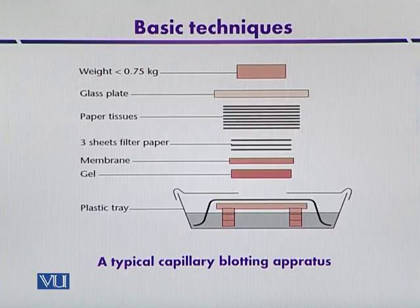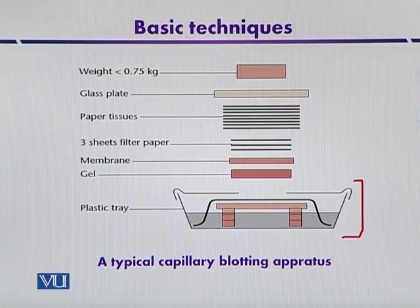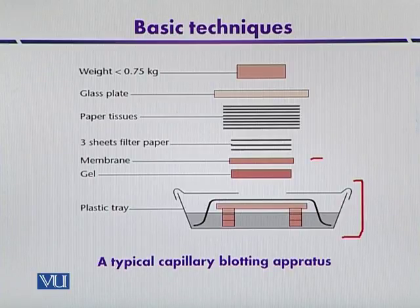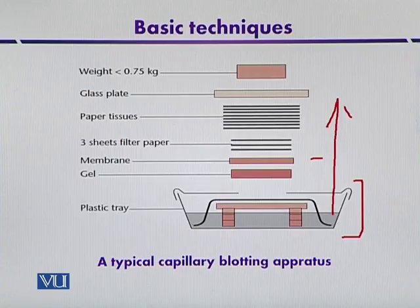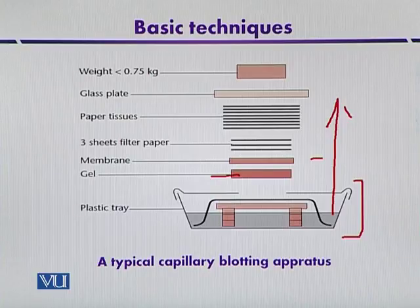This diagram shows a typical capillary blotting apparatus. There is a reservoir containing buffer solution. The gel is in contact with this buffer, and above the gel one places the membrane. The membrane is in contact with different filter papers or tissue papers so that it can absorb the buffer. As the buffer is absorbed, it moves upward through the gel. With the flow of the buffer, the DNA molecules contained within the gel move onto the membrane, where they are immobilized. After immobilization, the DNA is ready for hybridization experiments using a radiolabeled probe.